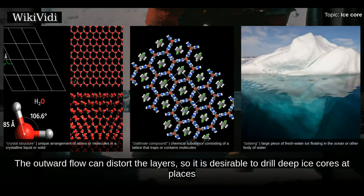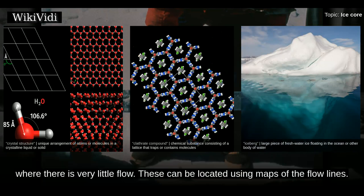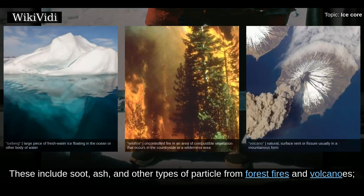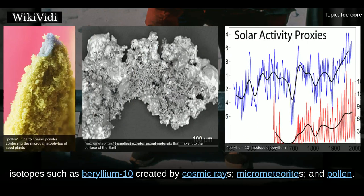The outward flow can distort the layers, so it is desirable to drill deep ice cores at places where there is very little flow. These can be located using maps of the flow lines. Impurities in the ice provide information on the environment from when they were deposited. These include soot, ash and other types of particle from forest fires and volcanoes, isotopes such as beryllium-10 created by cosmic rays, micrometeorites, and pollen.